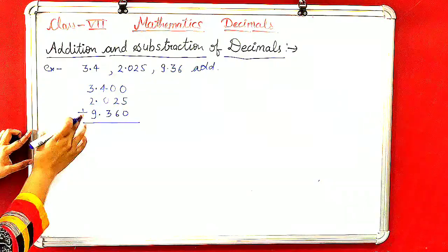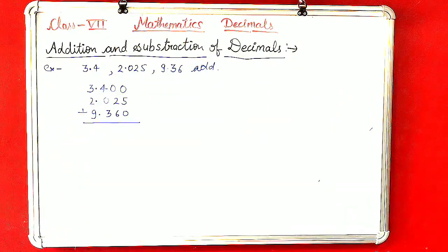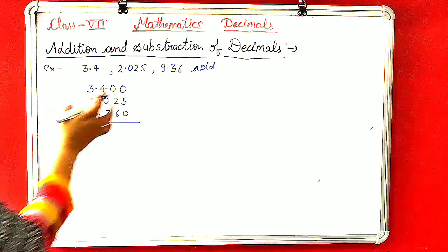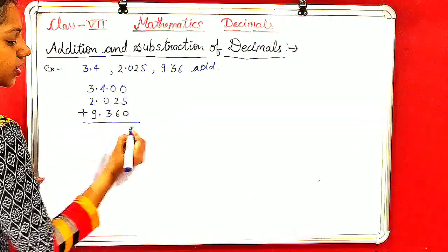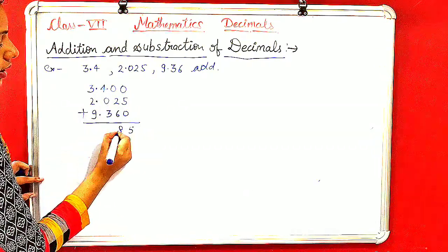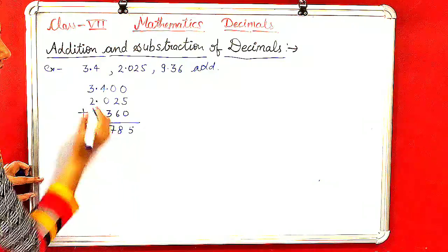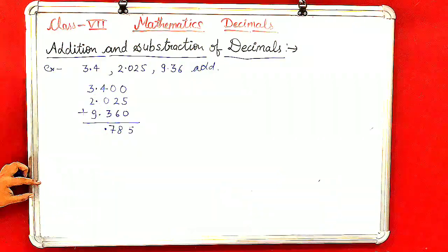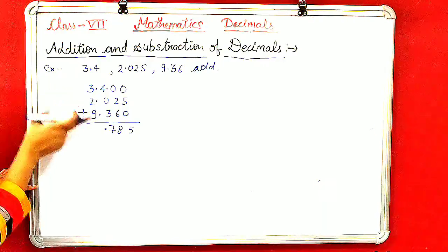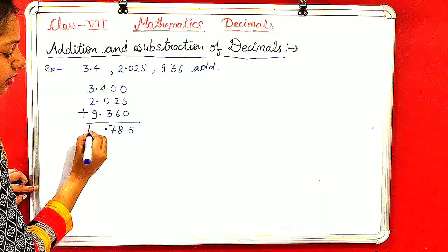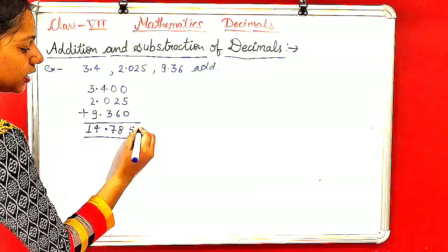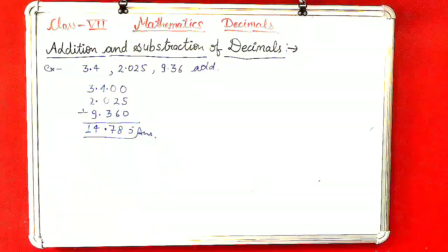Now we add them. Simple addition where the decimal is, the decimal will be in the answer. The answer is 15.625 and then 14.785.